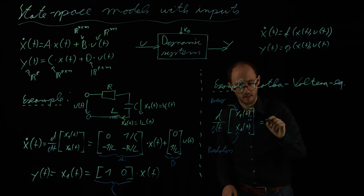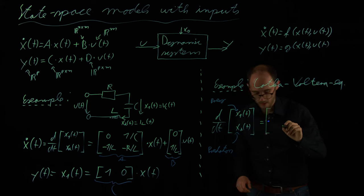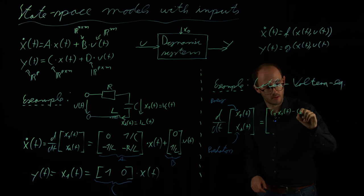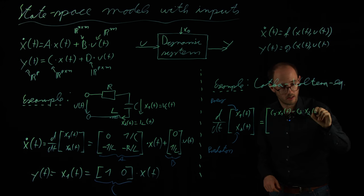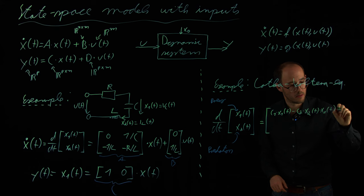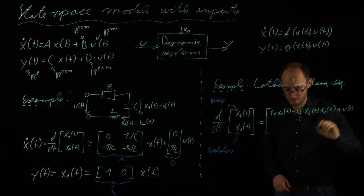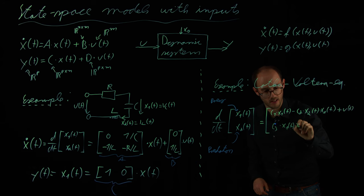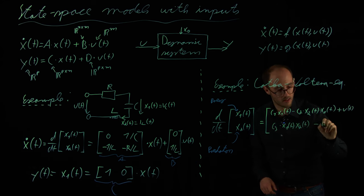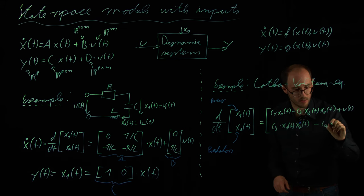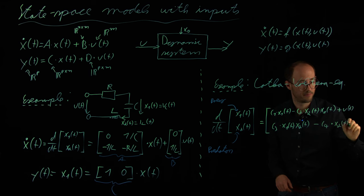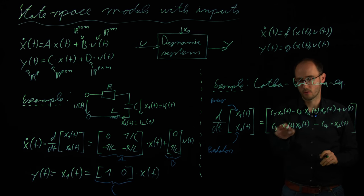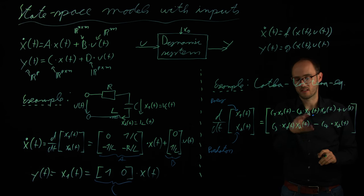And the right-hand side of this equation, in a classical way, is some constant c1 times x1 of t, minus c2 times x1 of t times x2 of t, plus u of t. And for the second state derivative, we get c3 times x1 of t, times x2 of t, minus c4 times x2 of t. So, what does this state equation basically tell us? We have four constants, c1, c2, c3, c4. These are basically the constants describing the dynamics of the systems.